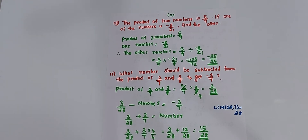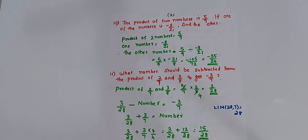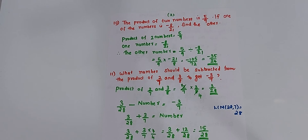10th question: the product of two numbers is 5 by 9. If one of the numbers is minus 8 by 21, find the other. The product is given and one number is given, so to get the other number, divide the product by the known number. Divide 5 by 9 by minus 8 by 21 — find the reciprocal and multiply. You will get minus 105 by 72, which equals minus 35 by 24.